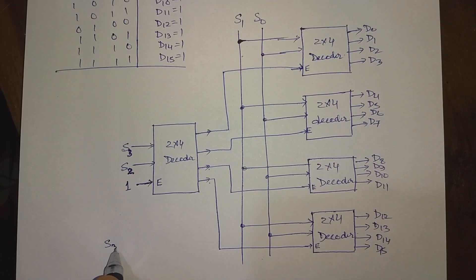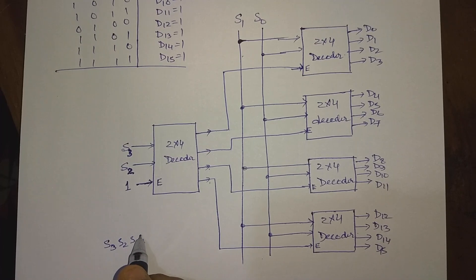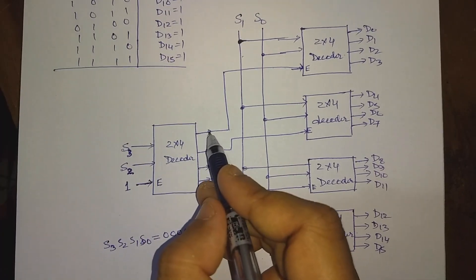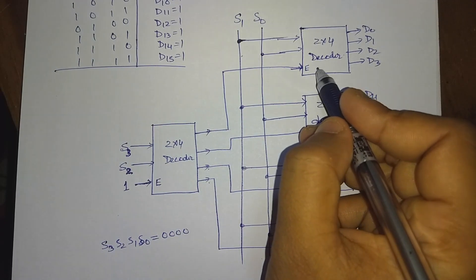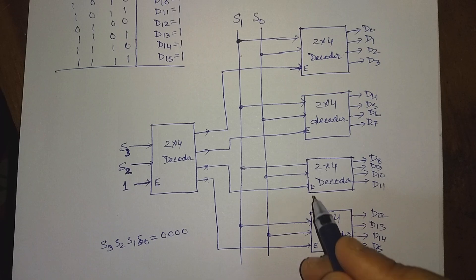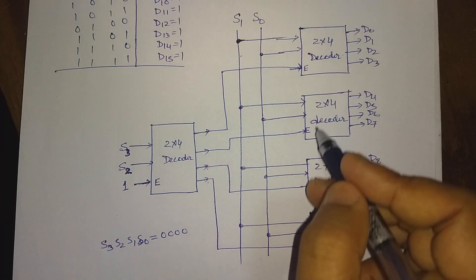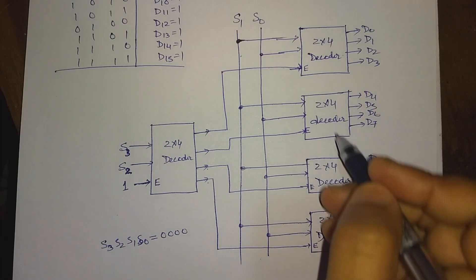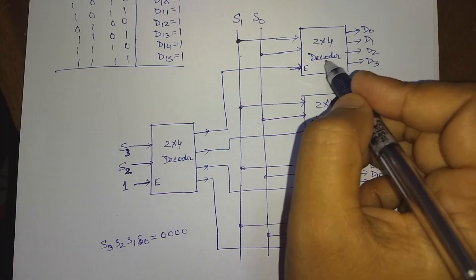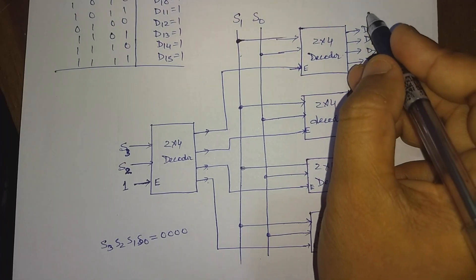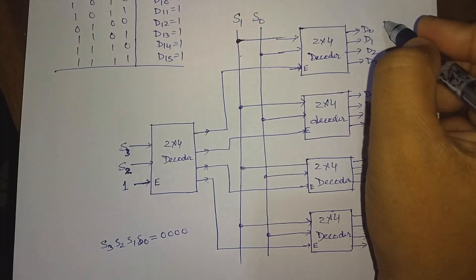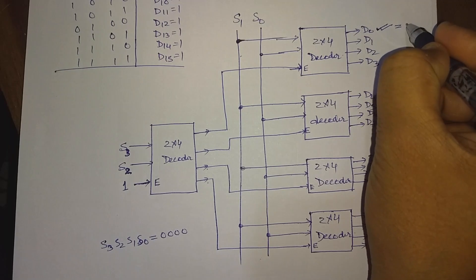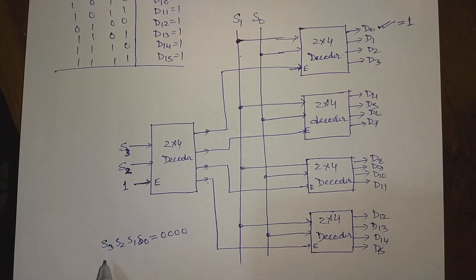Now let us see how it works. Suppose S3, S2, S1, S0 equal to 0 0 0 0. Since S3 and S2 are 0 0, this first decoder will receive an enable input that is high. That means all the other three decoders will be disabled and this one will be activated. So we will have any one of its outputs active, and these outputs also depend on S1 and S0. Since S1 and S0 are also 0 0, we will get D0 output high, that means we will get a value of 1 here.